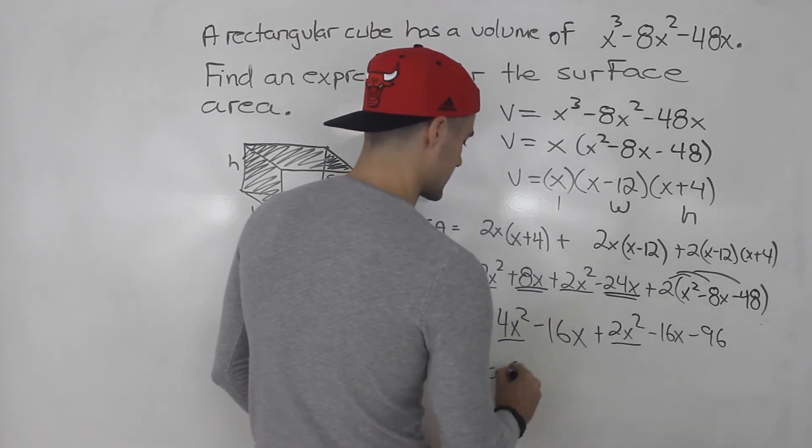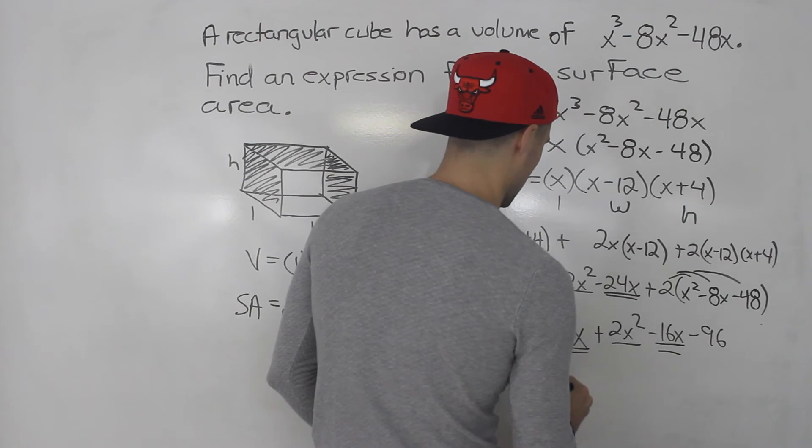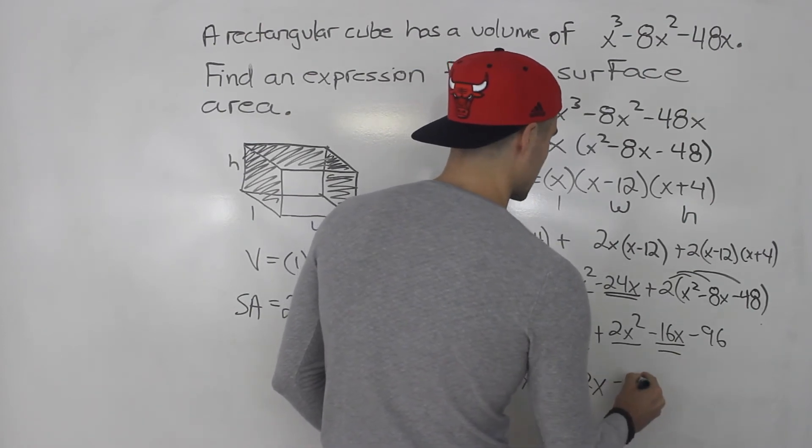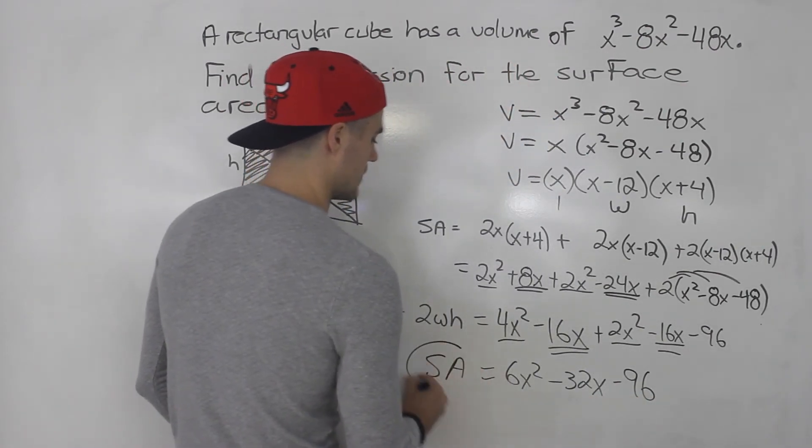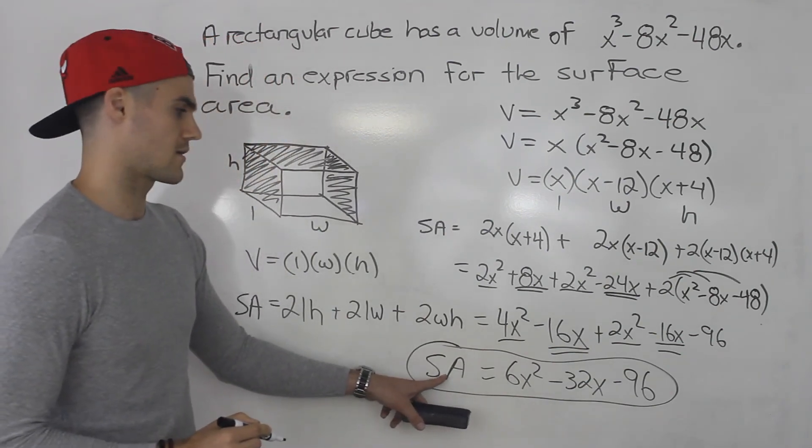So then further like terms, we get 6x squared. This here would be minus 32x, and then the minus 96 is just by itself. So that there is an expression for the surface area.